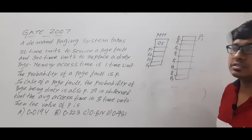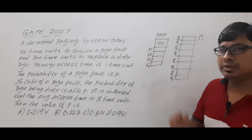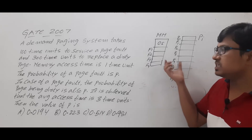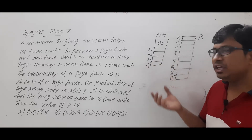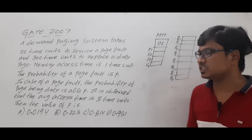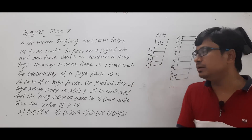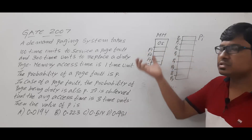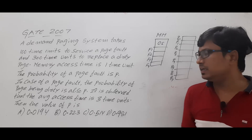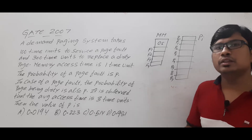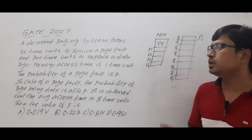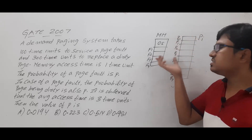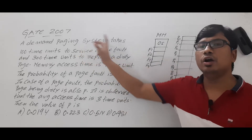If you have 4 frames and 8 pages, the process size is greater than the main memory. Whenever the CPU wants to execute any instruction, that instruction must be loaded into main memory. If the process size is greater than main memory, it is not practically possible to bring all instructions at once. This is where the virtual memory concept comes in — we give the user an illusion that a process larger than main memory can be executed, through on-demand paging.